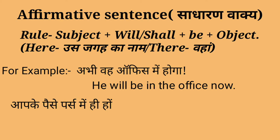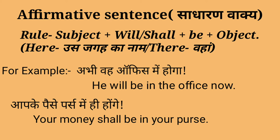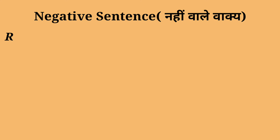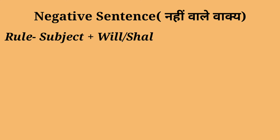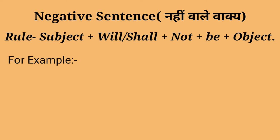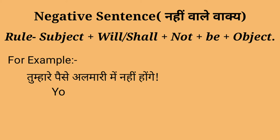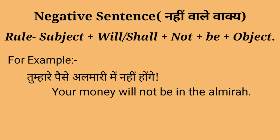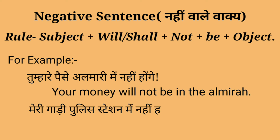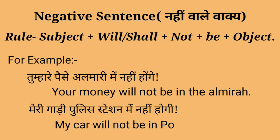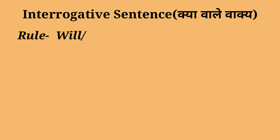Aapke paise purse mein hi hoga — Your money shall be in your purse. Next is negative sentence — arthat 'nahi' wale vaakya. For making this we use: Subject + will/shall + not + be + object. For example: Tumhare paise almari mein nahi hoga — Your money will not be in the almirah. Meri gaadi police station mein nahi hogi — My car will not be in the police station.